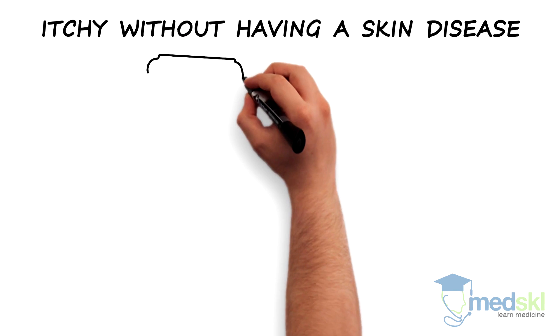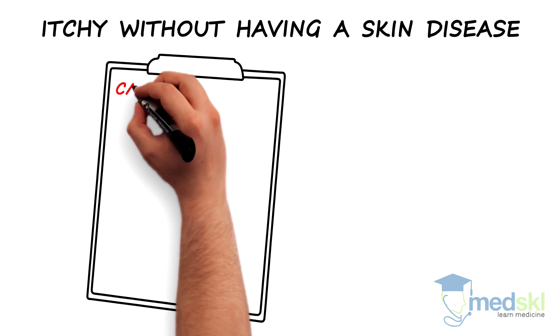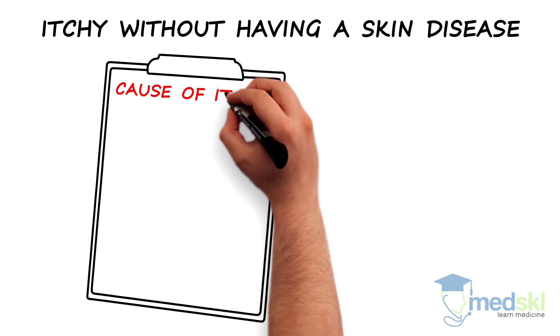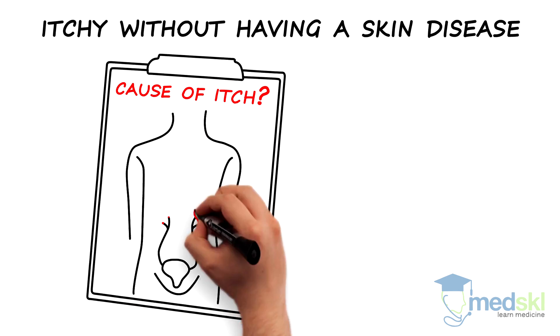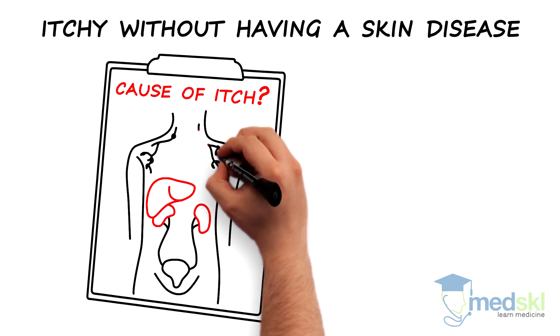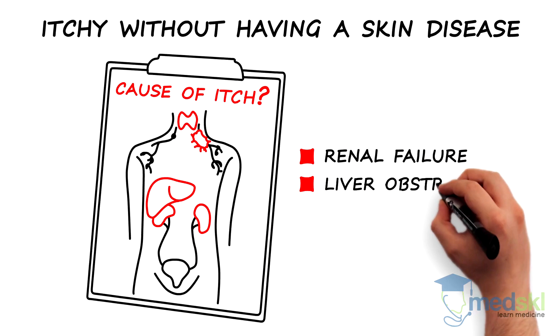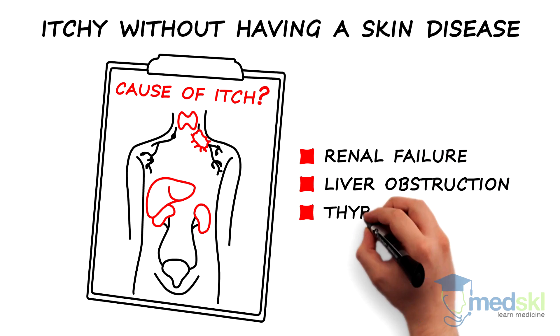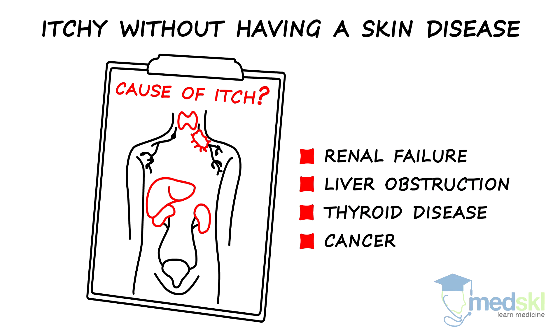When you determine that a patient is itchy without having a skin disease, the next step is to determine the cause of their itch. Itch can be the result of many internal diseases, including renal failure, liver obstruction, thyroid disease, and cancers such as lymphoma.